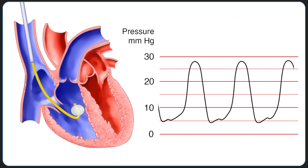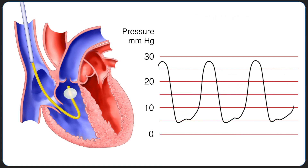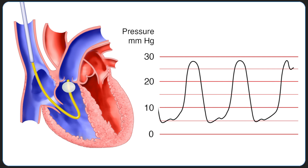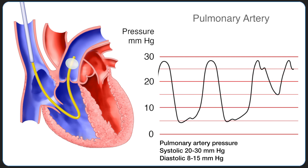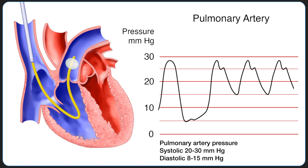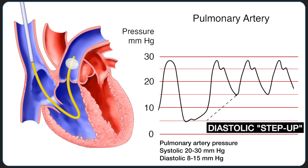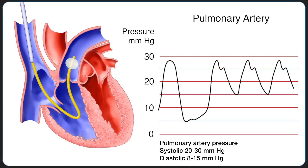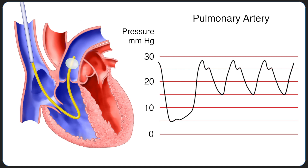As the catheter is advanced further, the PA catheter will then float across the pulmonary valve into the pulmonary artery, displaying a PAP waveform. In comparison to the right ventricular pressure waveform, there is an increase in diastolic pressure, also known as the diastolic step-up, when the catheter is in the pulmonary artery. The most distinct feature seen on the PA tracing is a downslope in the pressure tracing during diastole.